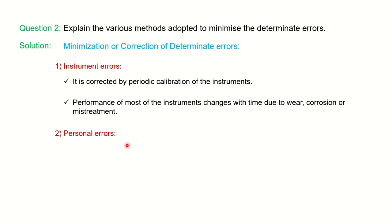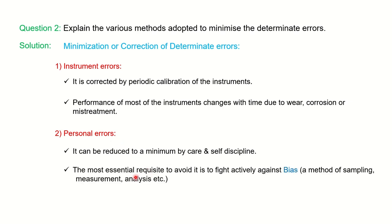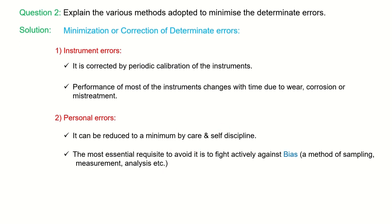Personal error. Personal error means that self-discipline is required or care is required while taking the sample. The most essential requirement is you have to fight against bias. When you are sampling the sample here, taking the measurement or doing the analysis, you have to be very careful. Otherwise it arises the determinate error or causes the systematic errors.